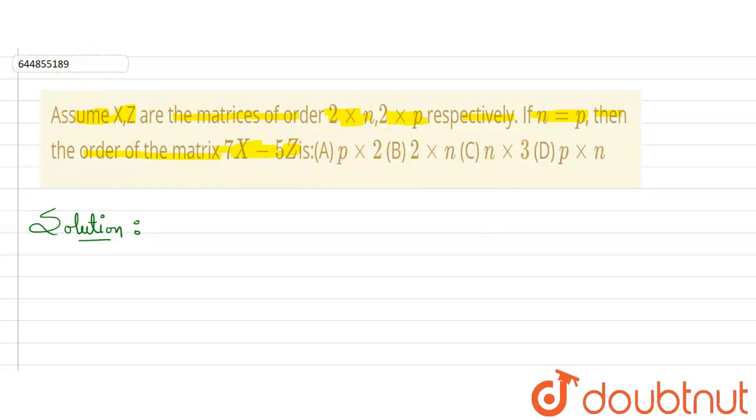Four options are given; we need to check which option is correct. Here let's write: order of X is given as 2 × n, and similarly order of matrix Z is also given as 2 × p. What we need to find is the order of 7X minus 5Z.